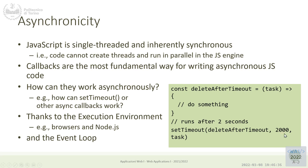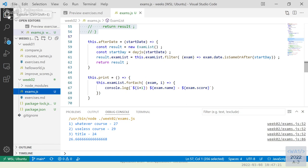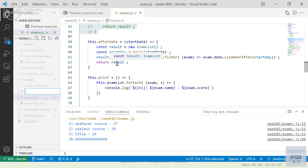setTimeout receives a callback and a time interval. When you call setTimeout, your code executes immediately and moves forward immediately to the next instructions. The callback is not called right now. When using filter or map, the callback is called immediately and only when all computation is finished do you move forward. With setTimeout, you go forward immediately and the function will be called later. Let's see some practical examples — let's start a simple file, timeouts.js.